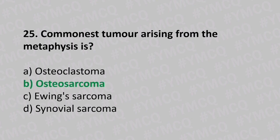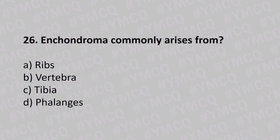Question number twenty-six: enchondroma commonly arises from option A ribs, option B vertebrae, option C tibia, option D phalanx. The answer is option D, phalanx.